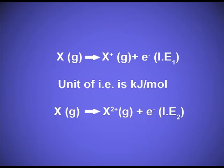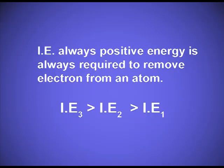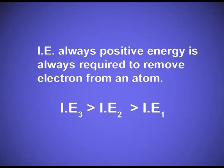If we want to remove one more electron, that ionization energy is known as the second ionization energy. When we removed the first electron, that is known as IE1 or first ionization energy. Ionization energy is always positive because we always need energy to remove the electron. The third ionization energy is greater than the second, and the second is greater than the first ionization energy.